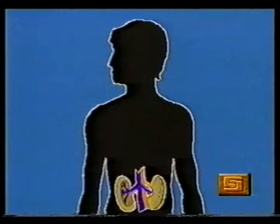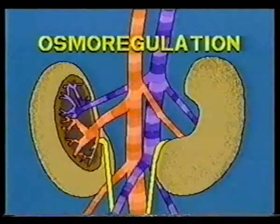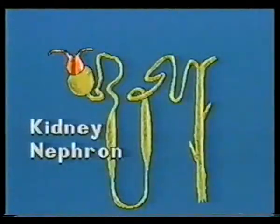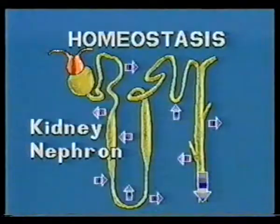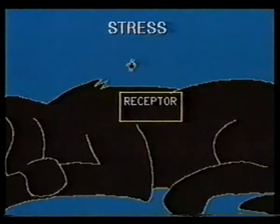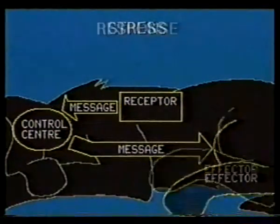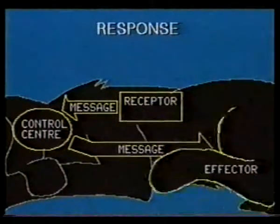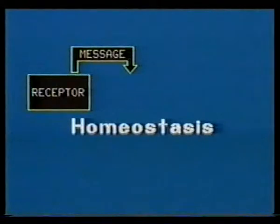We humans need far more than our wits to survive. Like many organisms, we depend on complex processes such as osmoregulation. Osmoregulation is centered in the kidneys and helps maintain homeostasis by carefully balancing the fluid and chemicals leaving the body. To study this and other processes, biologists use a general model of homeostasis: stress, receptor, control center, effector, response, and finally feedback to complete a cycle. This model can be used to explore even very complex homeostasis mechanisms.